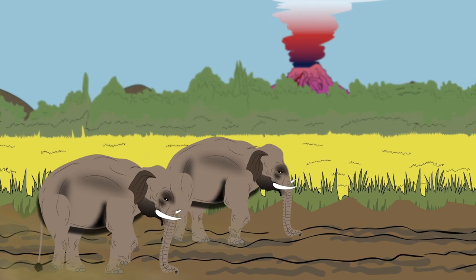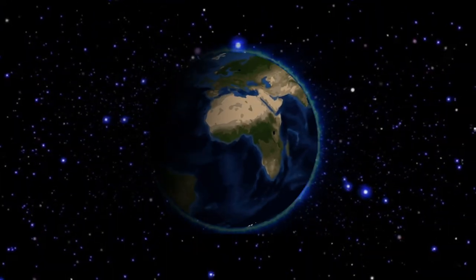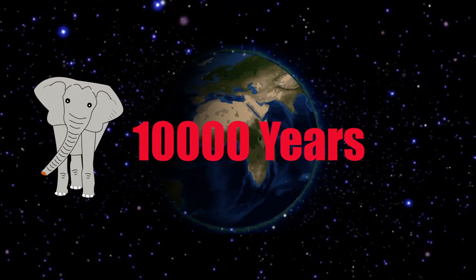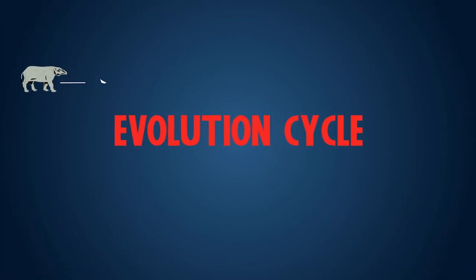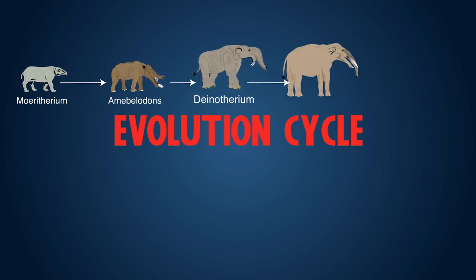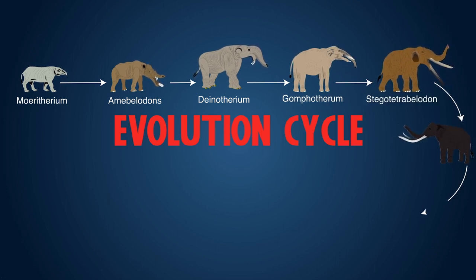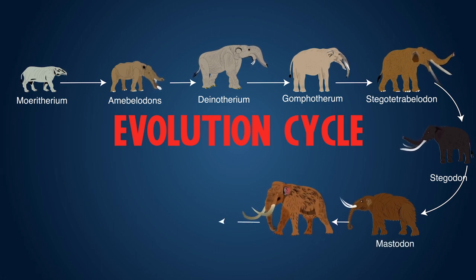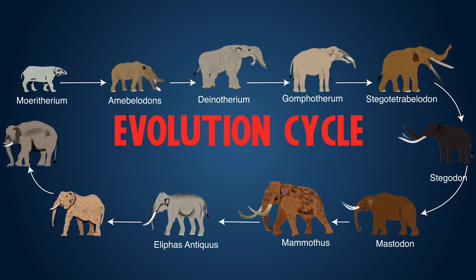Elephants evolved primarily in the old world and came to North America during a series of migrations. The immigrant elephants evolved into new North American forms, but ultimately all these elephants were extinct by 10,000 years ago. Ancestors of the elephant include: Moeritherium, Amebelodon, Deinotherium, Gomphotherium, Stegatetrabalodon, Stegodon, Mastodons, Mammoths, and Elephas antiquus — leading to the modern-day African and Asian elephants.